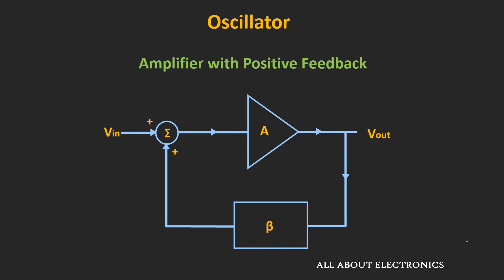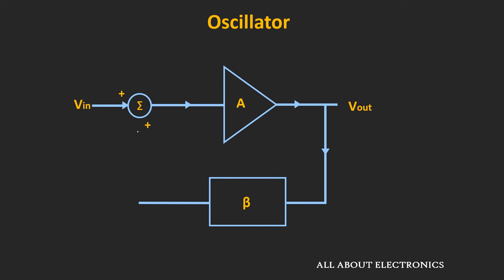In simple terms, this oscillator circuit is nothing but an amplifier which is given positive feedback. So let's understand the working principle. Let's say some input sinusoidal signal is applied to this amplifier — at the output, the input signal will get multiplied by the gain of this amplifier, and the output signal will be equal to A times the input signal.